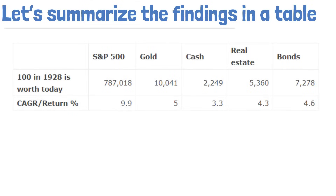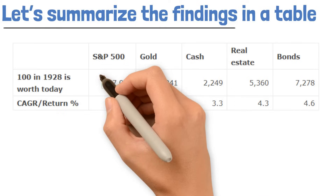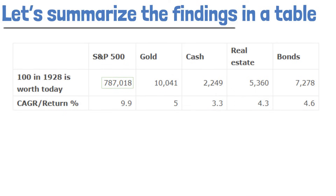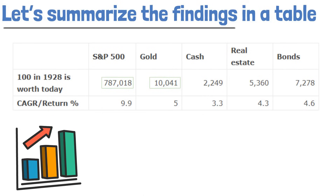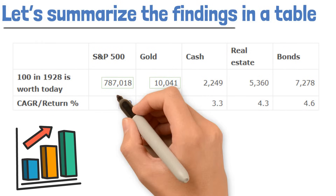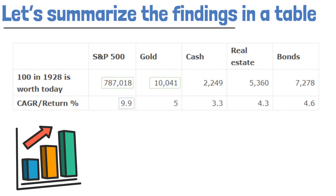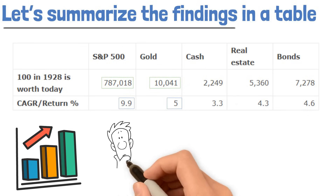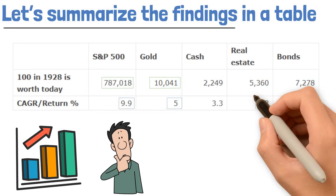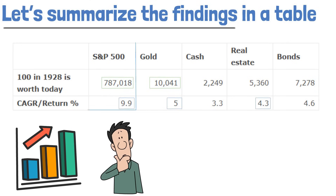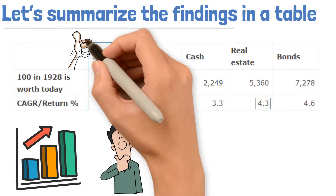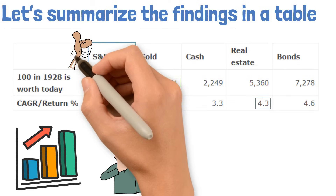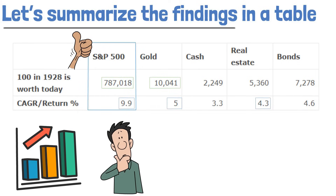$100 invested in the stock market in 1928 would have been worth $787,000 today, compared to only $10,000 for gold, the second-best-performing asset. Stocks returned 9.9% annually, while gold returned 5%. Perhaps surprising for many, real estate only returned 4.3% annually. This means that stocks are the best asset class, followed by gold, bonds, real estate, and cash.